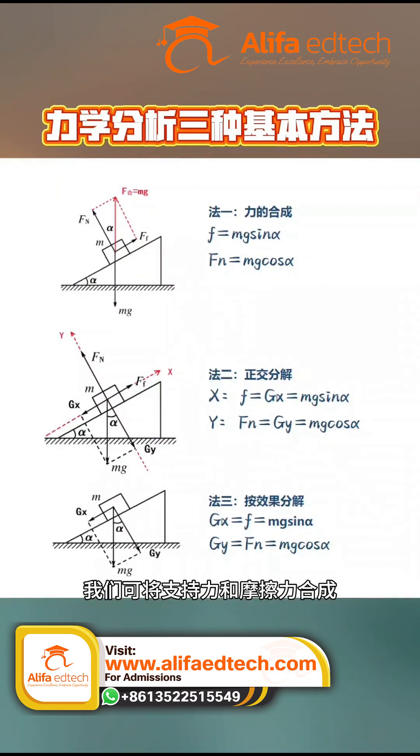We can combine the support force and the friction force. Their resultant force is equal in magnitude and opposite in direction to the force of gravity, forming a right-angled triangle. By using trigonometric functions, we can directly calculate the support force and the friction force.